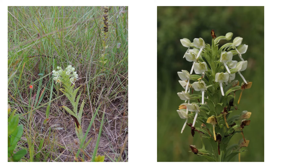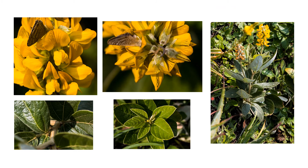Here we have images of an orchid — Epipactis — showing the whole plant where it emerges from the ground, and on the right a close-up showing a side and frontal view of the flowers. The next slide shows one of the pea family, an Argyrolobium, with a front view of a flower, a top view showing the calyces, a full plant showing reverse and front sides of the leaves, the leaf attachment to the stalk, and the shape of the trifoliolate leaves.